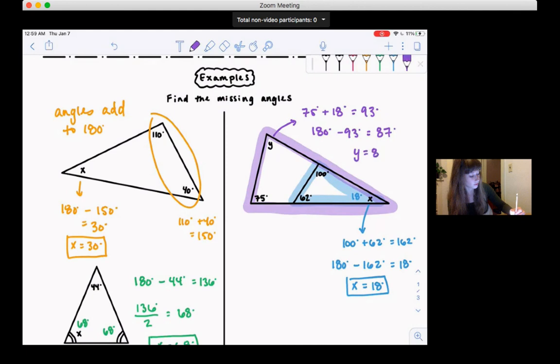So for that one, we used triangle sum twice, because we had two triangles. Okay, that's the triangle sum theorem.